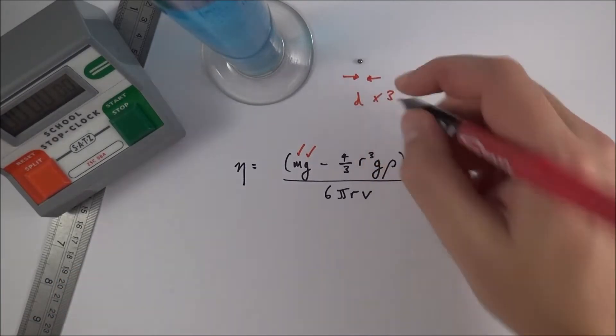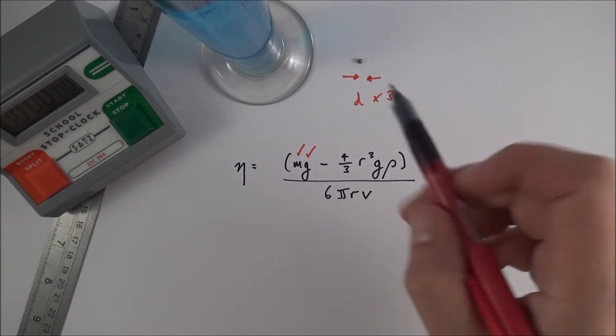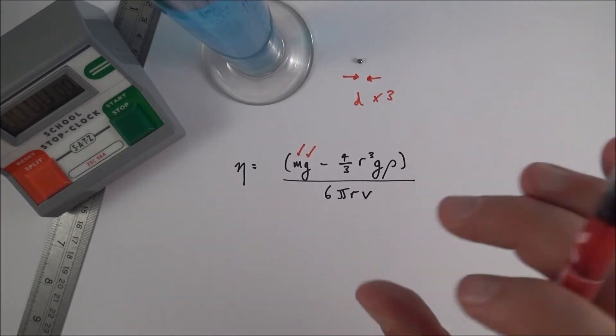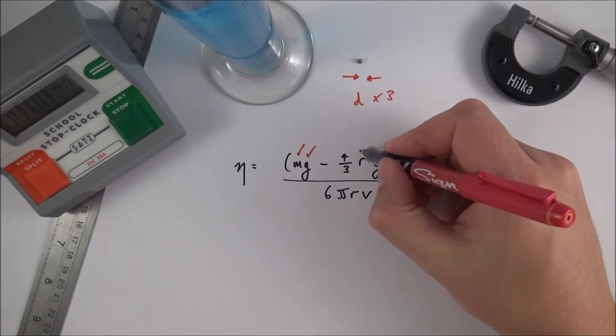And then what's important to do, and this is just best practice, if you're going to measure the diameter of something do it three times. You should hopefully get the same value three times but this just means that if it's not completely spherical in shape you can actually kind of just identify that. So you've measured the diameter three times, you divide by two to get your radius.